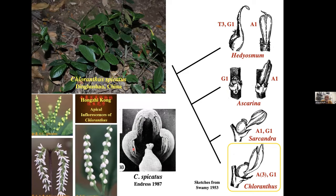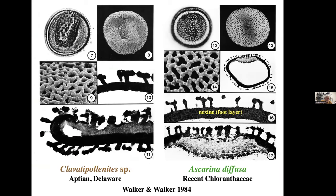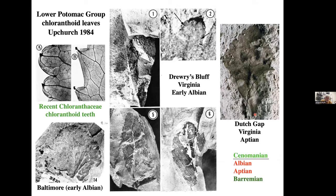The first sign that Chloranthaceae were important in the early angiosperm record came in 1958, when Cooper described the pollen genus Clavatipollenites from the Barremian of England and compared it with pollen of Ascarina from New Zealand. In the 1980s, Walker and Walker showed similarities at the EM level, including spinules (actually microvaricies) on top of the reticulum, sculpture on the sulcus membrane, and a thick foot layer. At the same time, Gary Upchurch showed that some leaves from the lower Potomac Group have chloranthoid teeth and also chloranthaceous cuticle features.